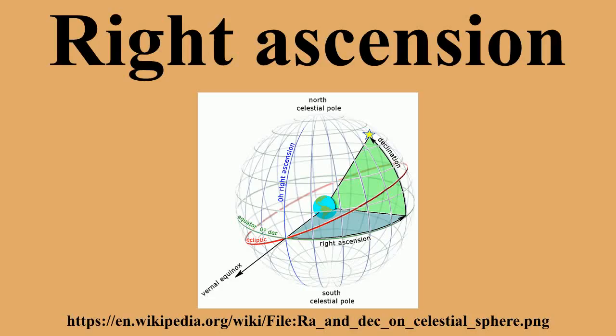Right ascension is the angular distance measured eastward along the celestial equator from the vernal equinox to the hour circle of the point in question.